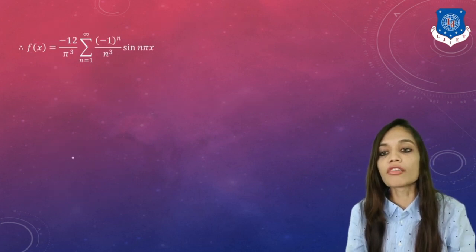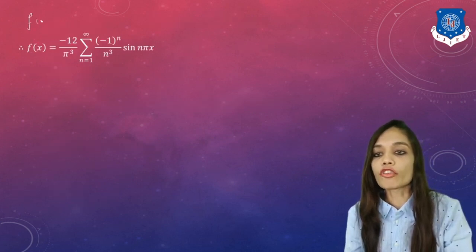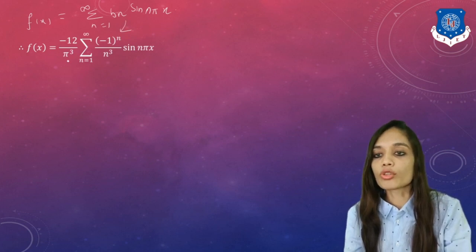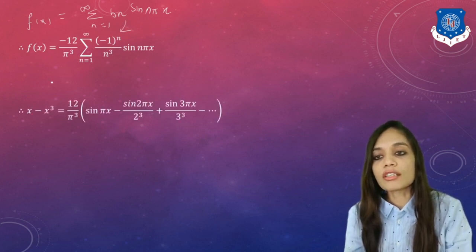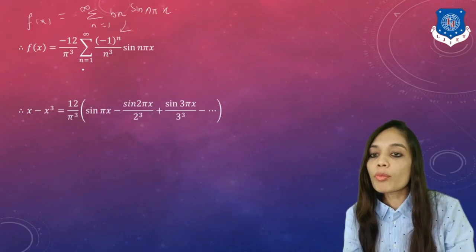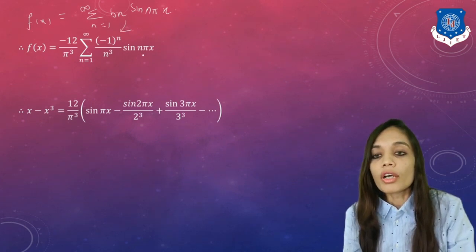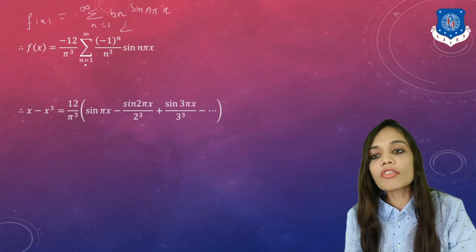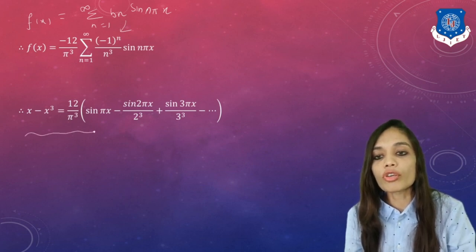Now substituting Bn into the Fourier series f(x) = Σₙ₌₁^∞ Bn·sin(nπx), and taking −12/π³ common, the final Fourier series answer is: x − x³ = (12/π³)·Σ [(−1)ⁿ⁺¹/n³]·sin(nπx), obtained by taking out the minus sign and substituting values of n consecutively.